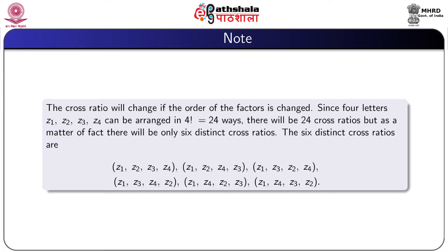Note: the cross ratio will change if the order of the factors is changed. Since four letters z1, z2, z3, z4 can be arranged in 4 factorial, that is 24 ways, there will be 24 cross ratios. But as a matter of fact there will be only 6 distinct cross ratios.